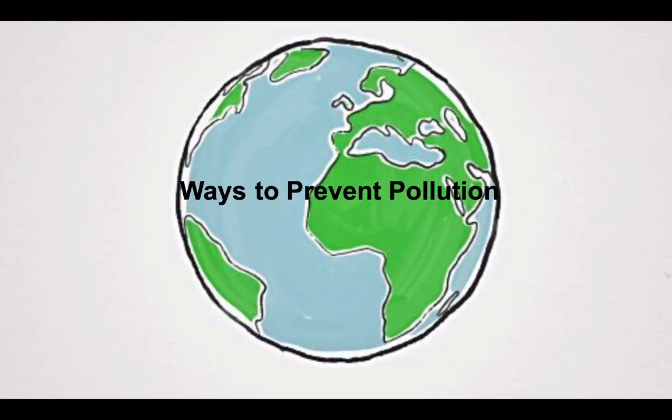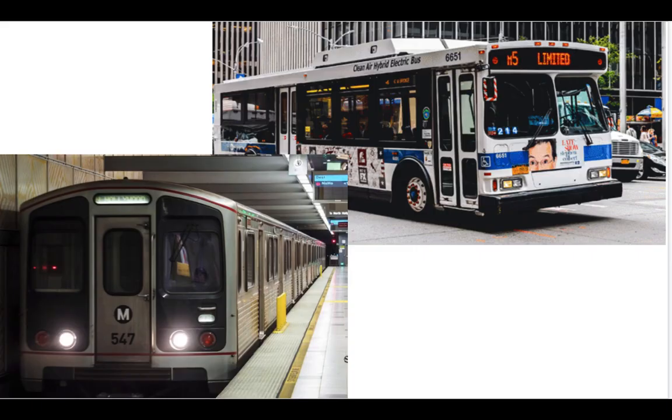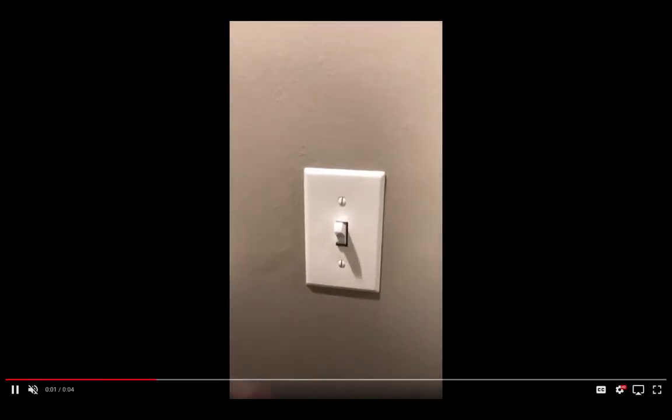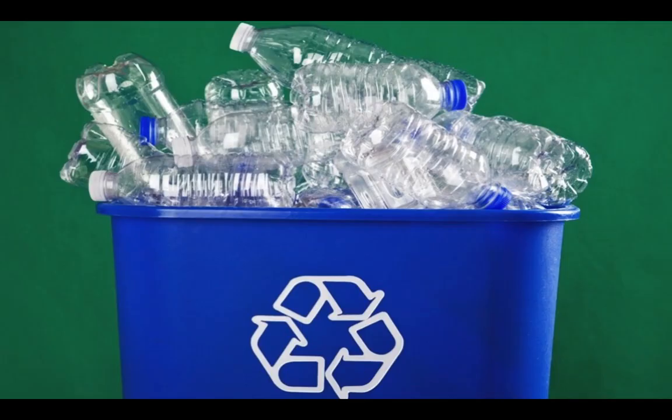Now, how can we positively prevent pollution? We can use public transportation such as the bus or the metro if you live in a bigger city. We can also turn off the lights when not in use, as I'm doing right here, and practice reduce, reuse, and recycle. So if you have a plastic water bottle and the choice to put it in a recycling bin or the garbage, put it in the recycling bin so it can be used for further use in the future.